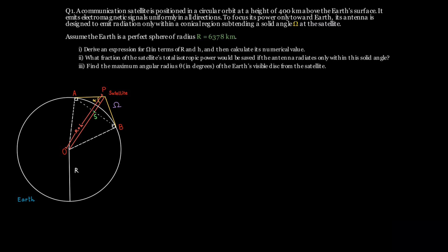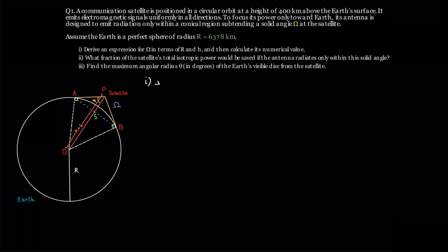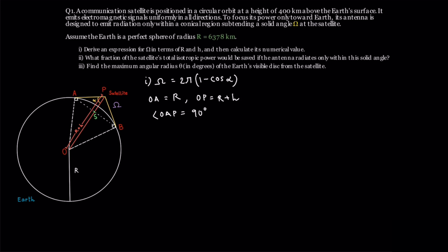We'll now solve this problem step by step. In part 1, we are deriving an expression for the solid angle in terms of r and h. To find the solid angle, we use the formula as defined earlier. Now we have that OA equals r and OP equals r plus h. Observe that the triangle OAP is a right angle triangle with the right angle at A. Using Pythagoras theorem, thus AP squared equals OP squared minus OA squared.